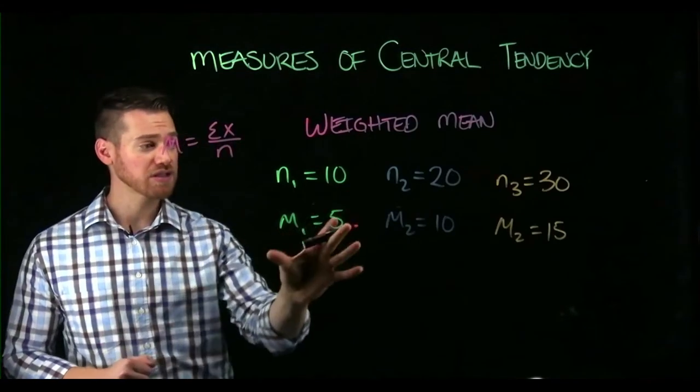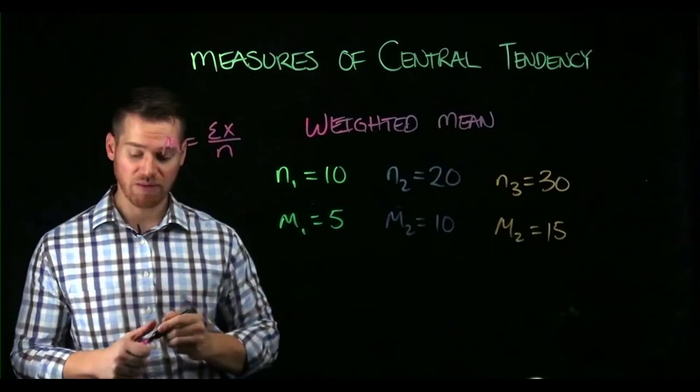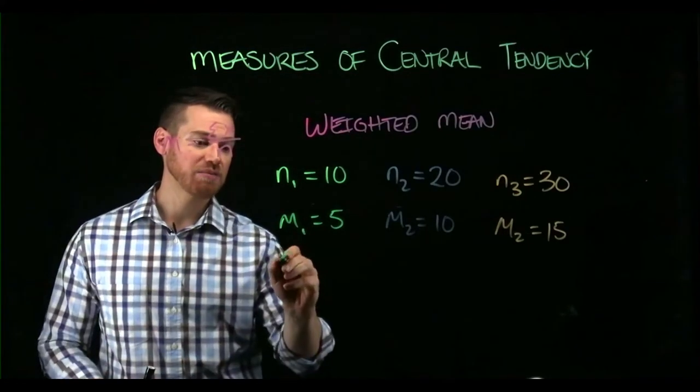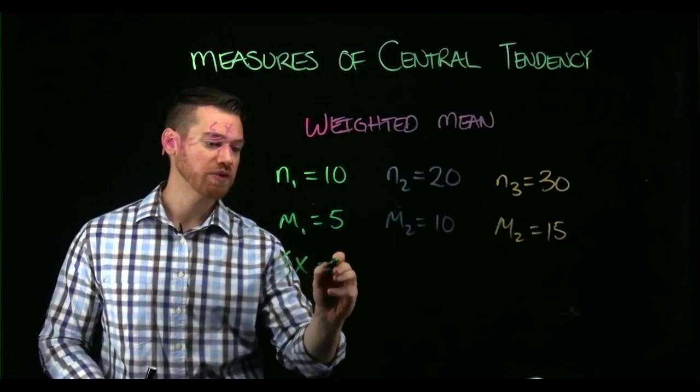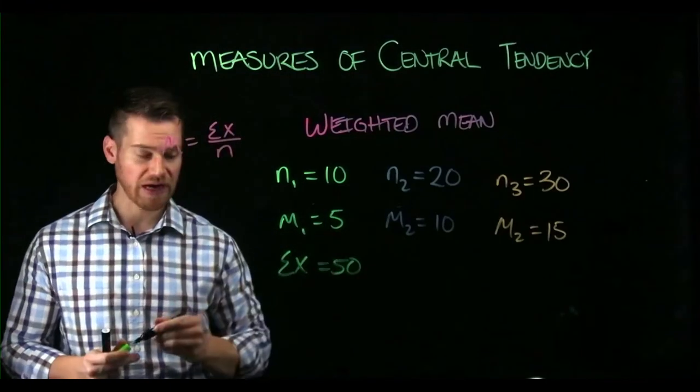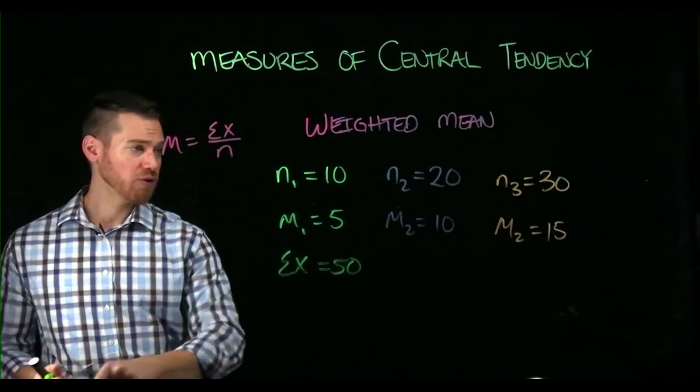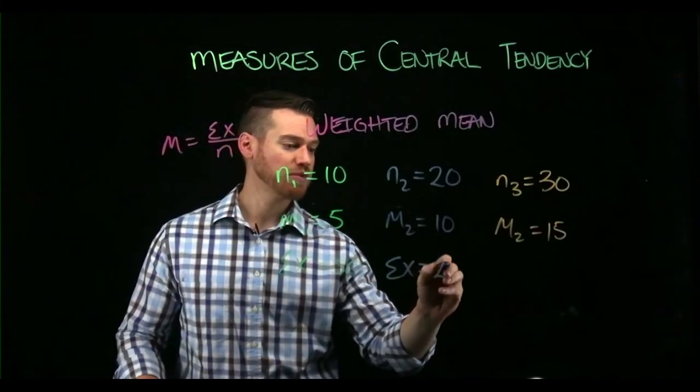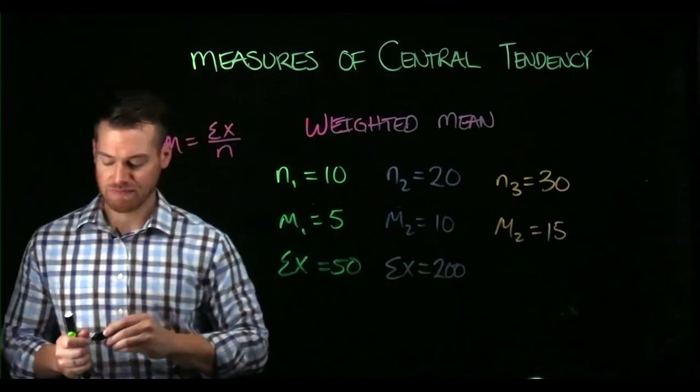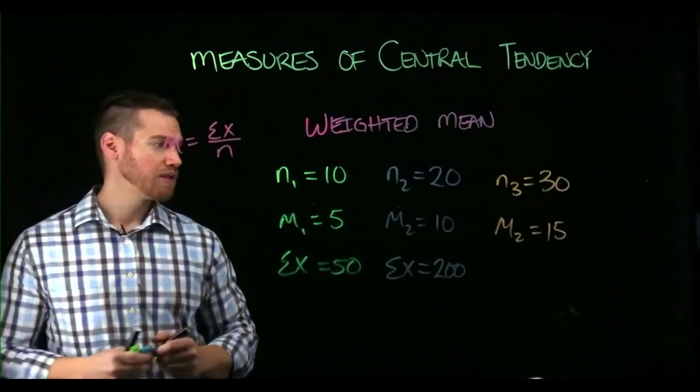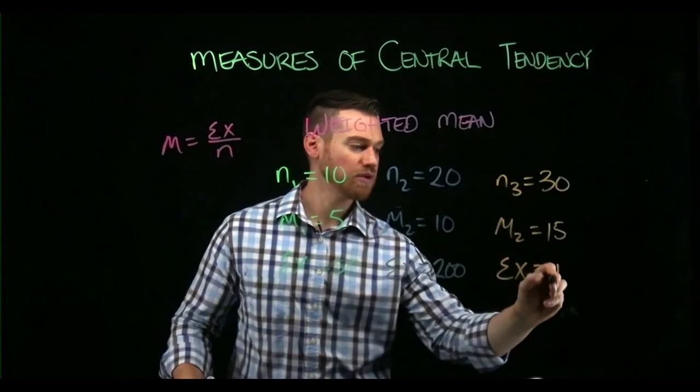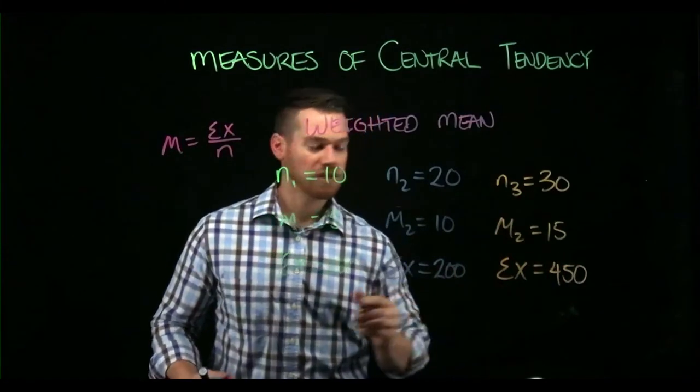If we know the sum for each of these, we can simply add those sums. So we can see that the sum of X for the first group is 50, 10 times 5. We can see that the sum of X for the second group is 200. And we can see that the sum of X for the final group is 450.